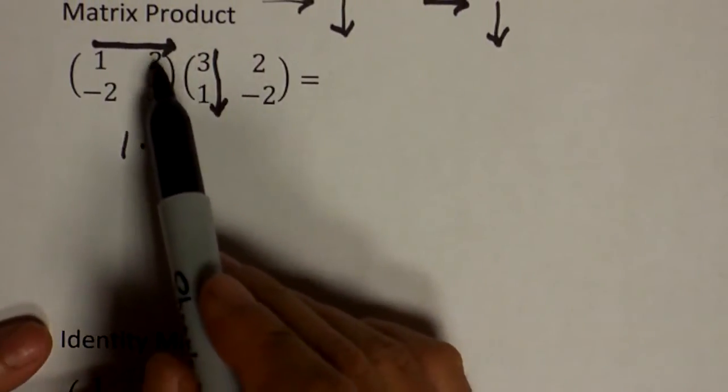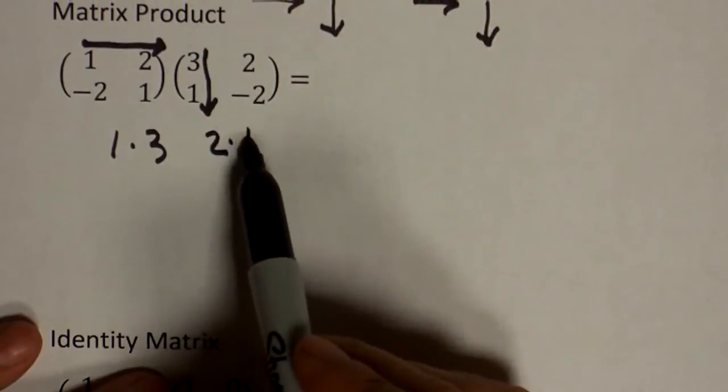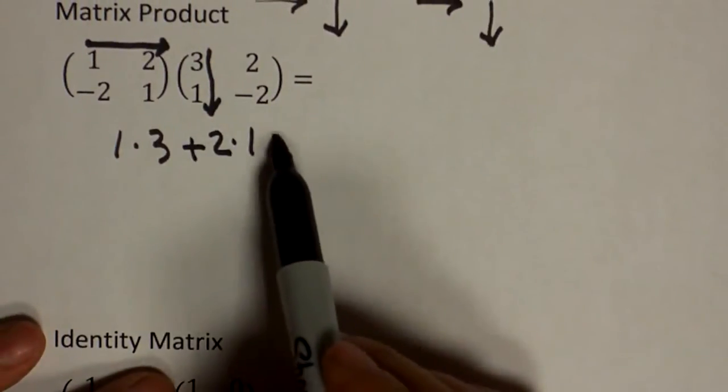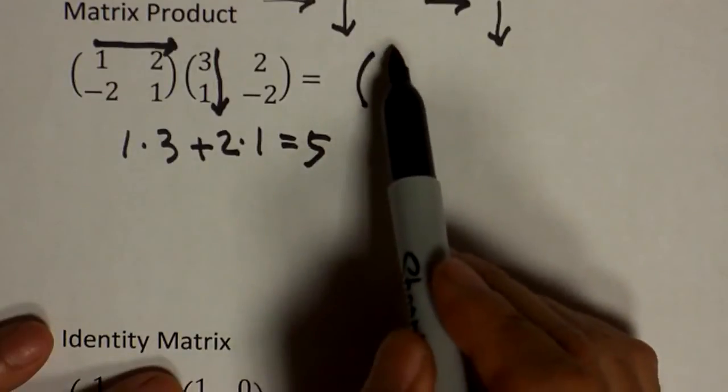Second element by second element, so it's two times one. And you just add them together. In this case, this is five, so I'm going to write that result here.